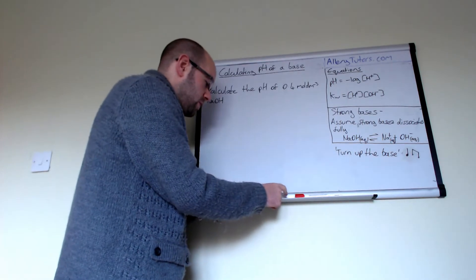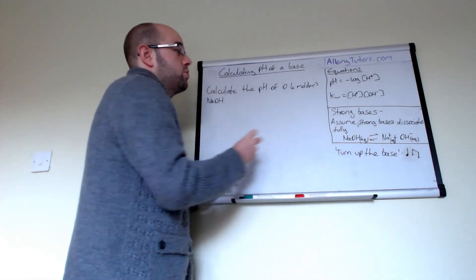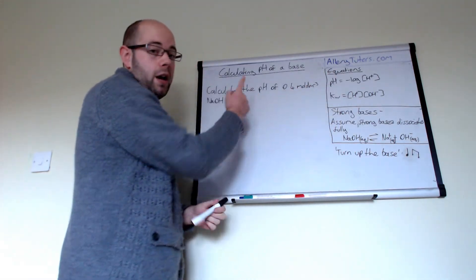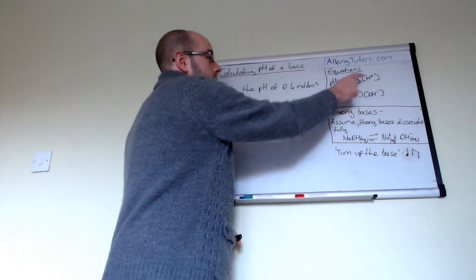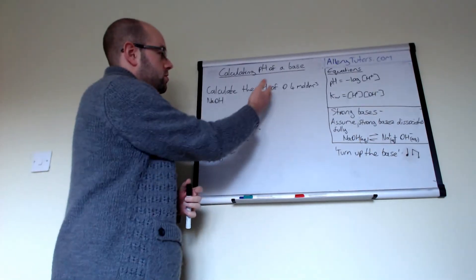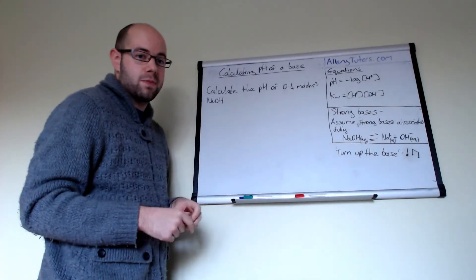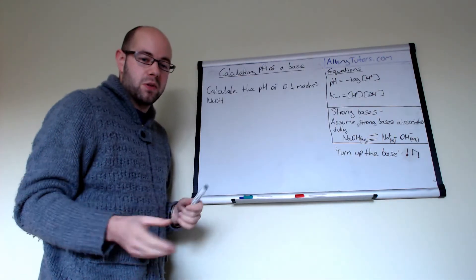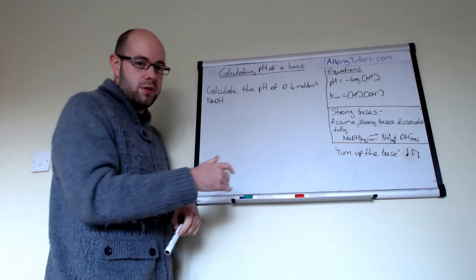The first thing that we need to do is we need to be able to work out the, because we're working out a pH, we need to work out the H plus. Because the sodium hydroxide doesn't have any H plus, we have to use Kw to work that out first, then we use the pH equation.